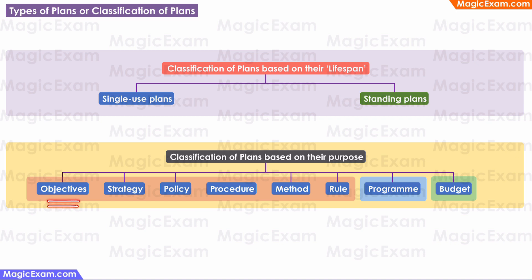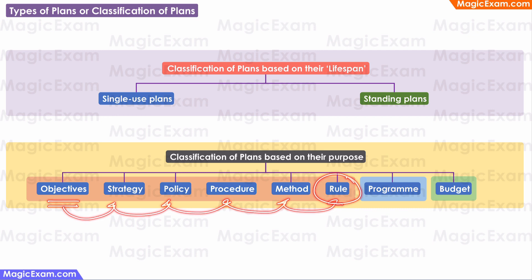Objectives are the highest level plans that may affect the entire organization, and the others go lower and lower until we come to a rule, which is very specific or focused. You will understand this better when we discuss each of these different classifications.